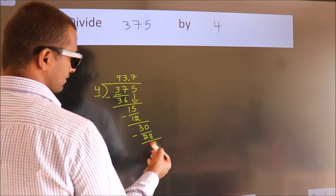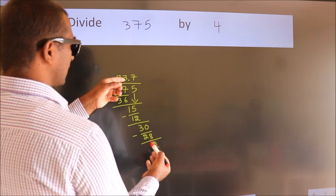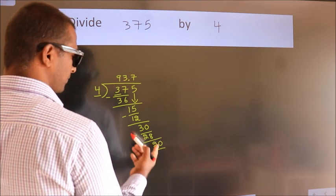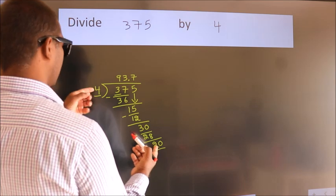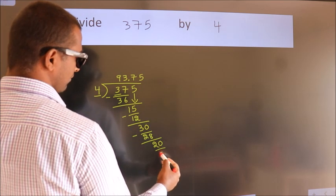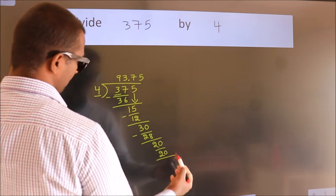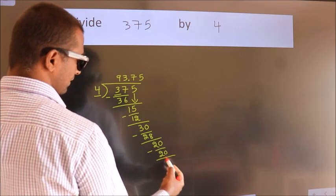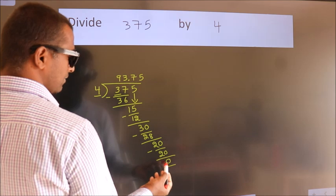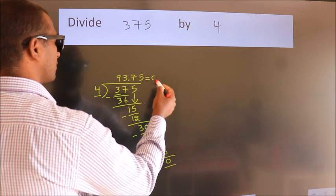After this, we already have the decimal, so directly take 0. So 20. When do we get 20 in the 4 table? 4 times 5 equals 20. Now we subtract. We get 0. We got remainder 0, so this is our quotient.